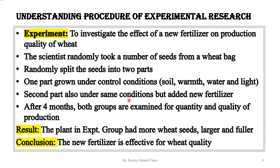For one group of seeds, in addition to these four controlled conditions, we also add the new fertilizer. So we provide the same environment by keeping these variables constant so that they do not affect our experiment, and then we add fertilizer to one of the groups of seeds.